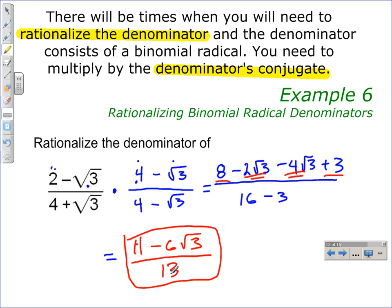Remember, when rationalizing the denominator of an expression that has a binomial radical expression, you multiply by its conjugate, meaning the conjugate over the conjugate.